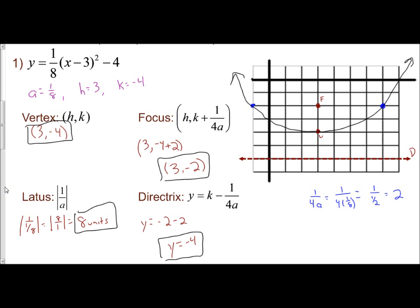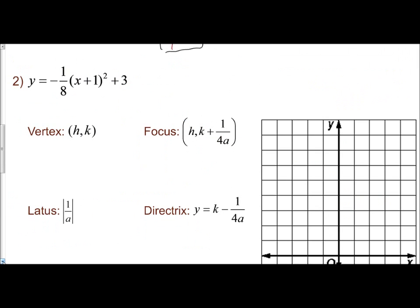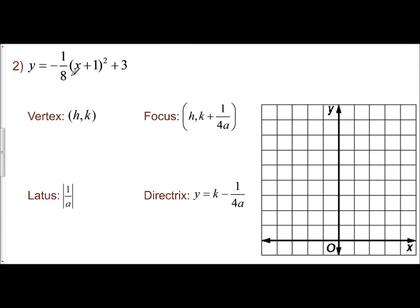So let's do another example. Here we have y equals negative 1/8 times the quantity x plus 1 squared plus 3. First thing to check: is this in standard form? Yes, it is. And so that allows me to find my a, my h, and my k values. So a is negative 1/8, h is negative 1, and k is positive 3. Right off the bat, I can see since a is negative, that means this parabola will be opening down.